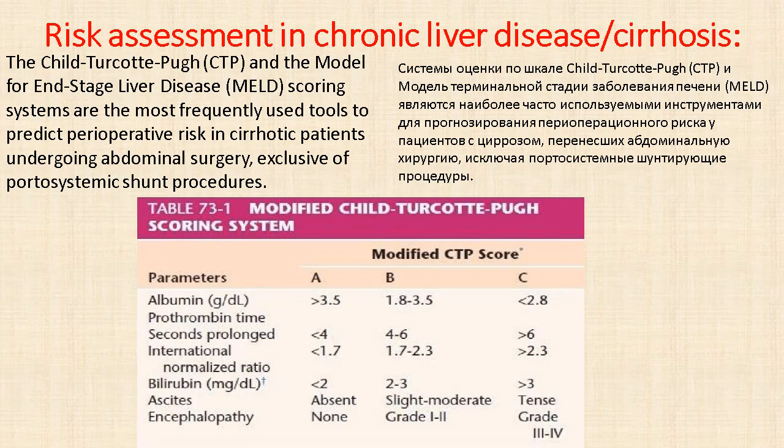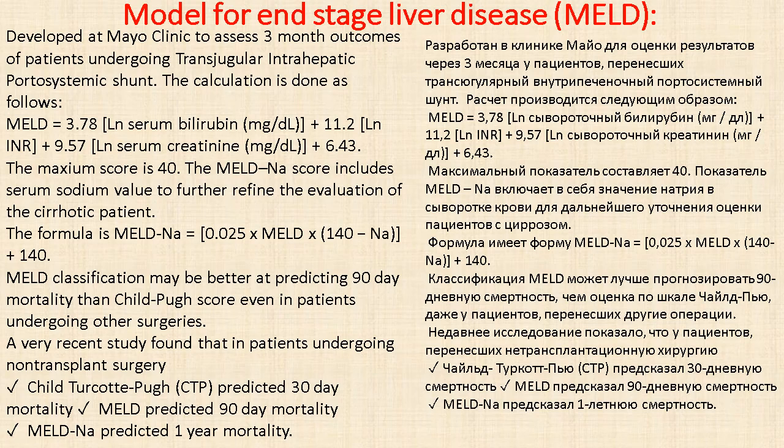Risk assessment in chronic liver disease uses CTP and the Model for End-Stage Liver Disease (MELD). Scoring systems are the most frequently used tools to predict perioperative risk in cirrhotic patients undergoing abdominal surgery or portosystemic shunt procedures. MELD was developed at the Mayo Clinic to assess three-month outcomes for patients undergoing transjugular intrahepatic portosystemic shunt. The maximum score is 40. The MELD-Na score includes serum sodium value to further refine evaluation of cirrhotic patients.